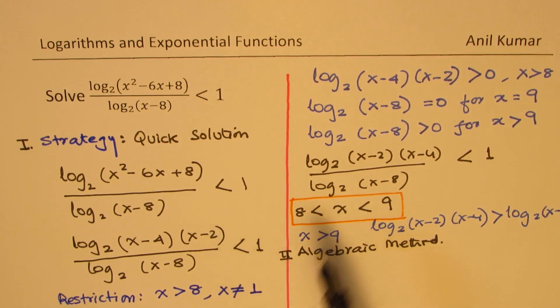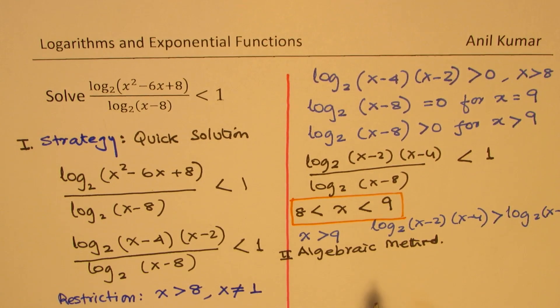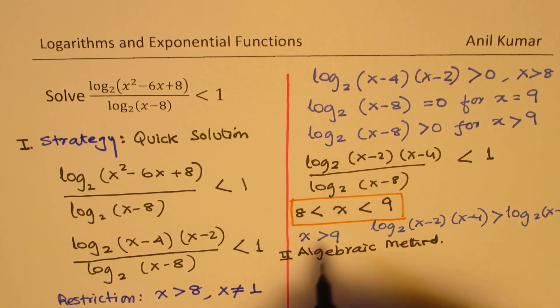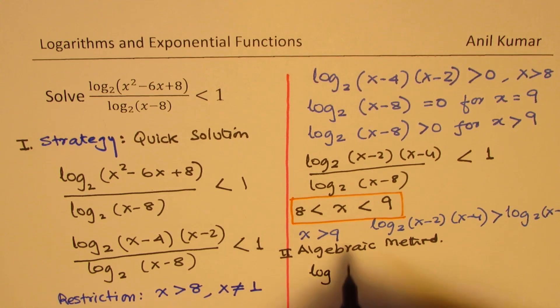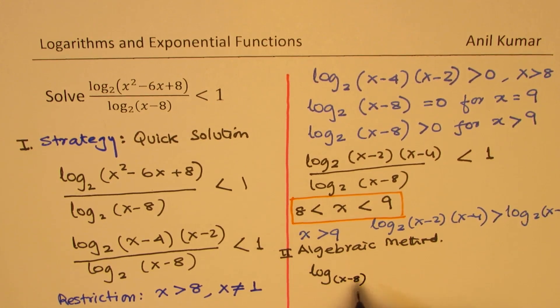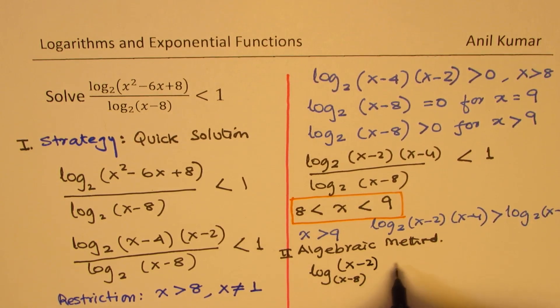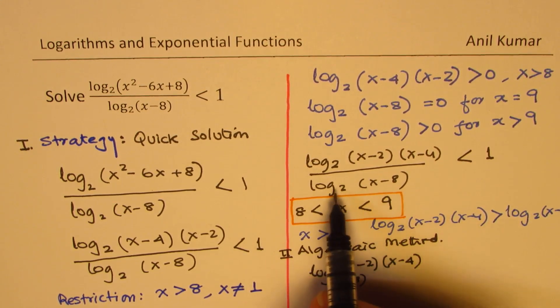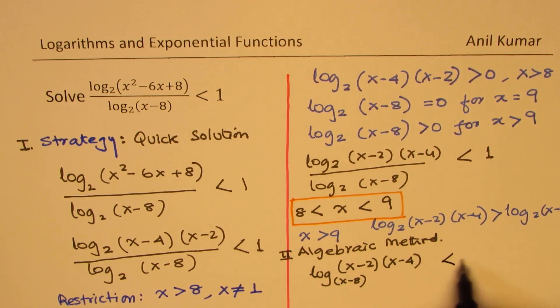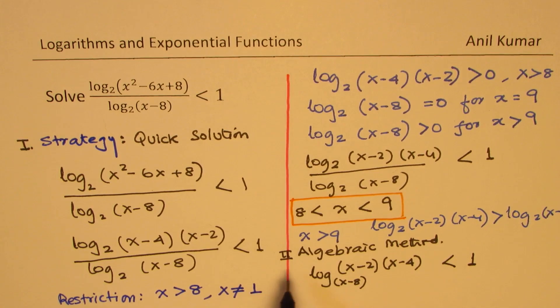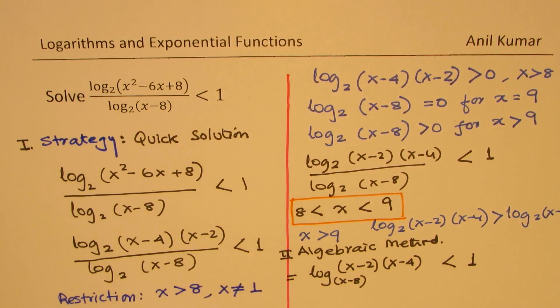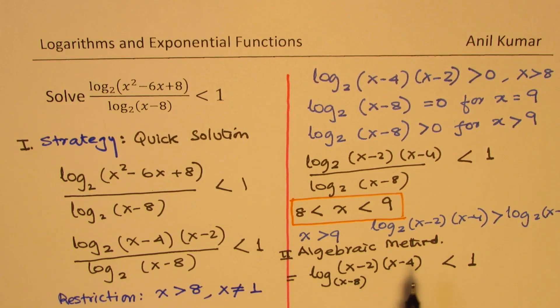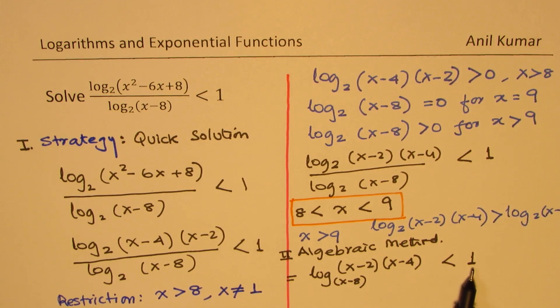So that's why this could be in a multiple choice test paper. Now, algebraic method is that this whole function can be written as equal to log to the base of (x - 8) of (x - 2)/(x - 4), less than 1. So you can change the base and rewrite like this. I recommend you to look into my videos on this. So that is how you could actually write this particular expression.